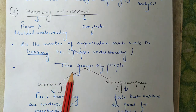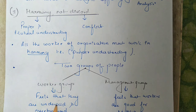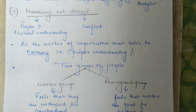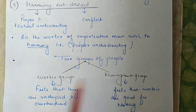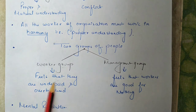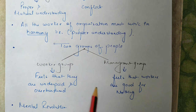Generally in every organization, there are two groups of people: the worker group and the management group. The worker group feels that they are underpaid and overburdened, while the management group feels that the workers are good for nothing. Both groups work as rivals — competitors of each other. According to Taylor, there is a need for both groups to change their attitudes and outlook, developing positive thinking toward each other as their objectives are in one direction.